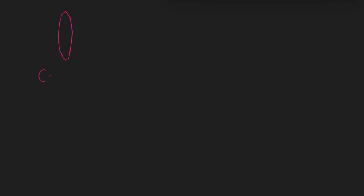In this video, we want to talk about lenses. Specifically, there are two different kinds of lenses that we talk about for the purposes of the MCAT. There are what are called convex lenses, also known as converging lenses, and there are concave lenses, also known as diverging lenses.